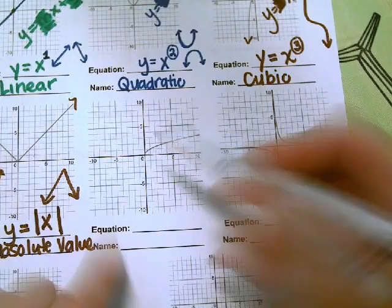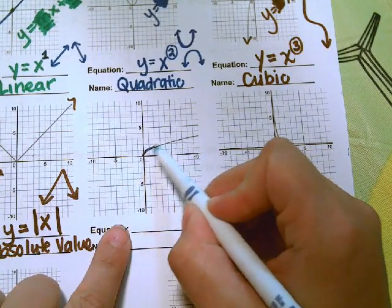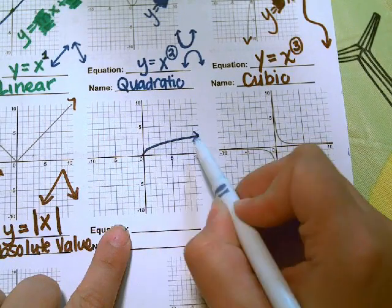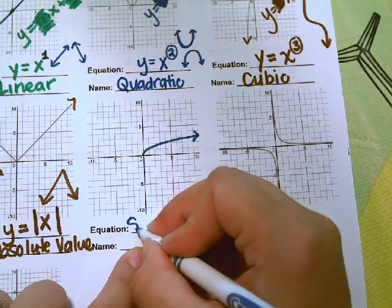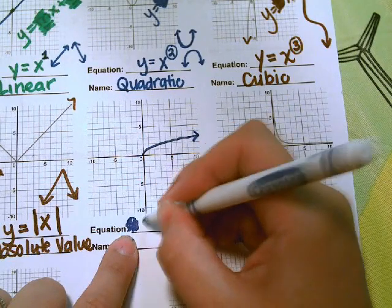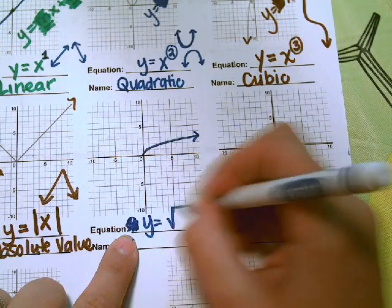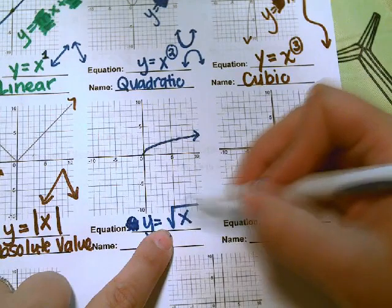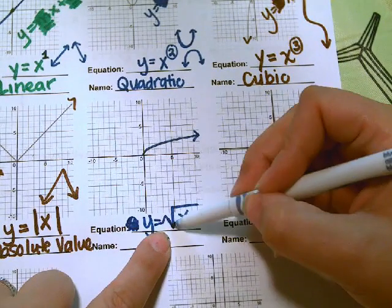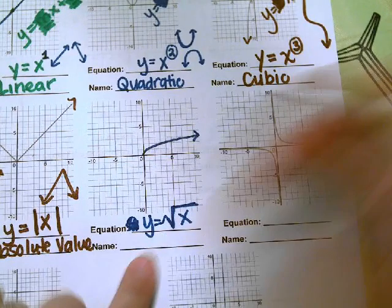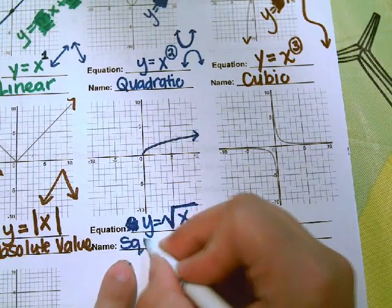Next, in order to graph something that looks like this shape, we need a square root. The equation will look like y equals the square root of x. We could have numbers around it, but this is the parent function that makes this shape. It's called a square root function.